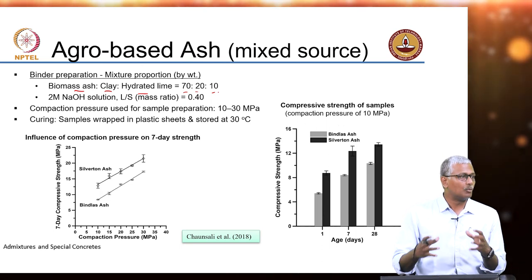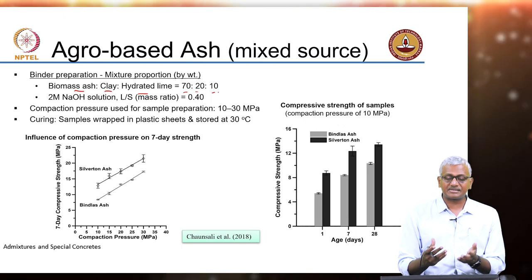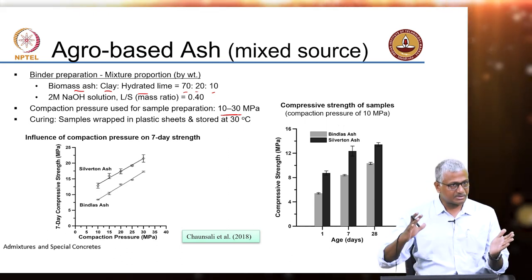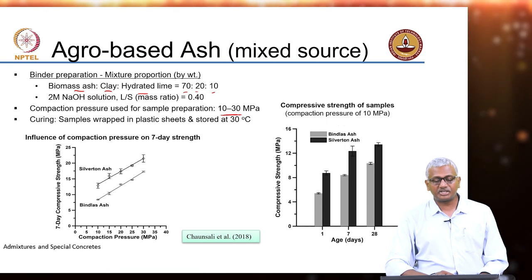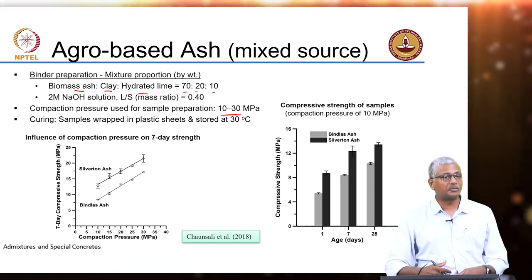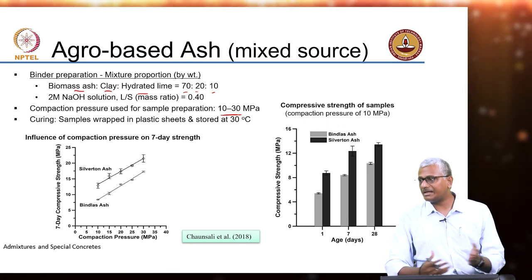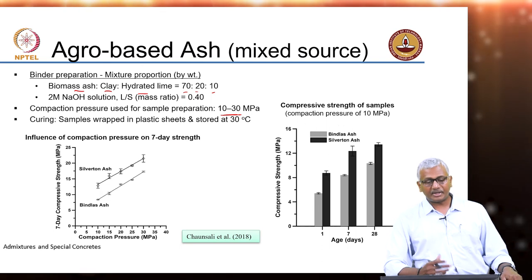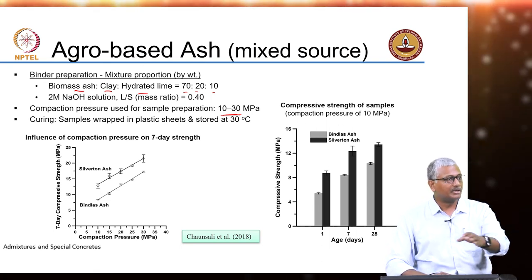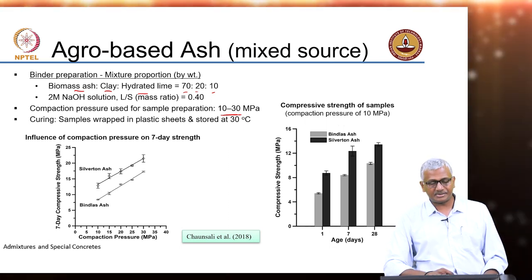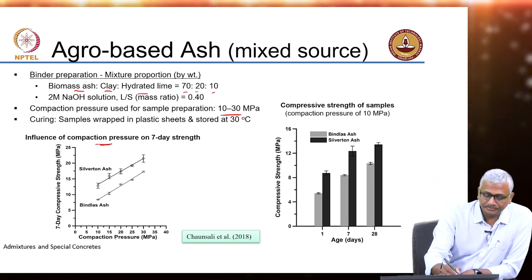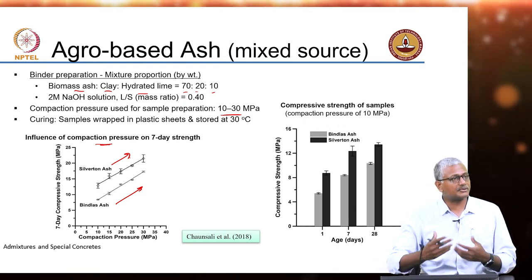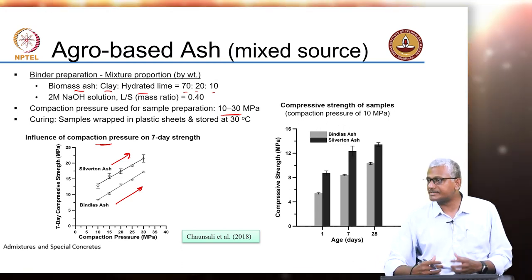For sample preparation they applied a compaction pressure of about 10 to 30 MPa. Systems were compressed into molds, wrapped in plastic sheets, and stored at 30°C — producing reactivity at regular temperatures rather than high-temperature sintering. Clay obviously has to be burnt at extremely high temperatures to harden into a brick. The idea was to show that even without burning, which consumes a lot of energy, bricks with sufficient strength could be produced. Increasing compaction pressure increases strength because of better particle packing and improved reactivity as particles come closer together with fewer voids.